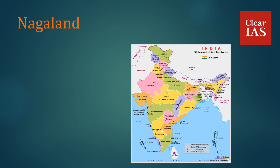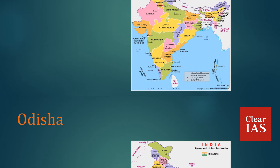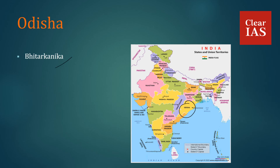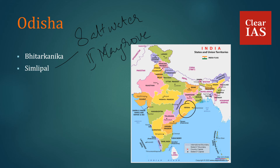In Nagaland, we have Intanki National Park. In Odisha, we have Bhitarkanika National Park, which is famous for its saltwater crocodiles and has the second largest reserves of mangrove ecosystem in India. We also have Simlipal National Park, which was recently in news because of its forest fires.